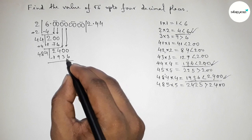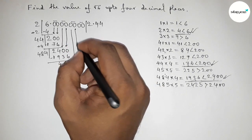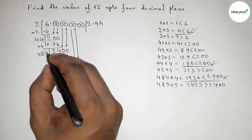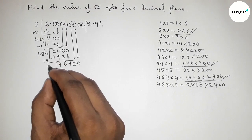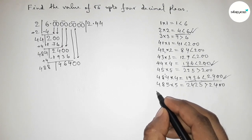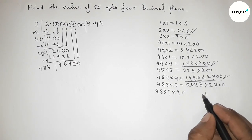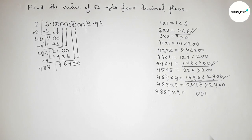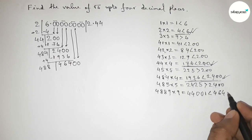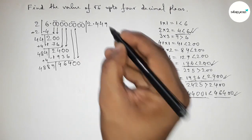Subtracting: 2400 − 1936 = 464. Now write down the next pair of zeros and draw a division line. The last digit is 4, so adding 4 + 4 = 8, giving 848. You can check 1 through 8 at home. Taking 8489 × 9 = 44001, which is almost near and less than 46400. So we take 9.